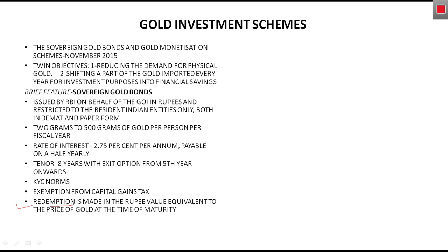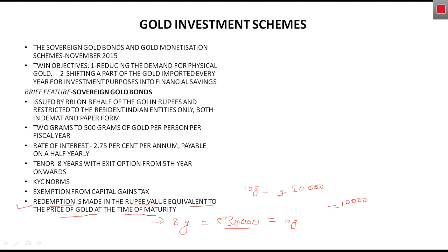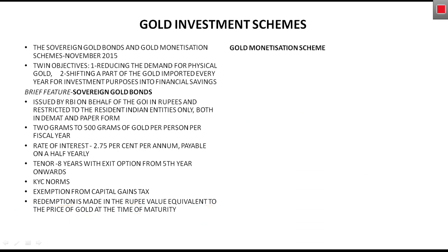Regarding redemption: it is made in rupee value. You purchase the bond by paying in rupees, and when you redeem it you receive the rupee amount equivalent to the price of gold at the time of maturity. For example, if at maturity the gold rate is ₹30,000 per 10 grams (tola) and you had originally paid ₹20,000 for 10 grams, your earning would be ₹10,000. You are paid based on the gold price at the time of maturity.